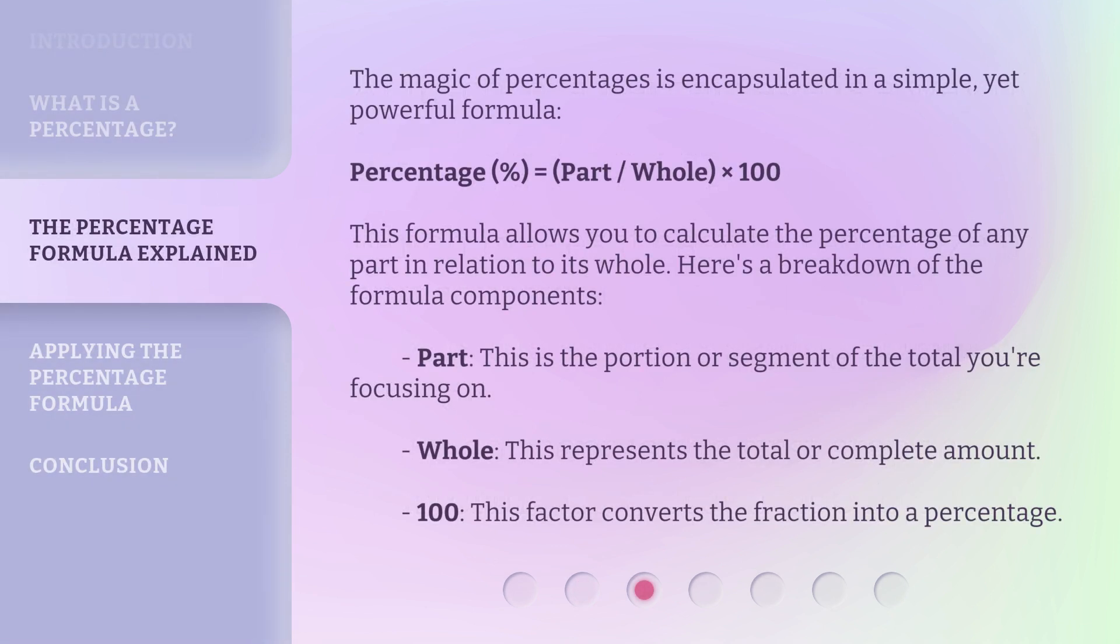The magic of percentages is encapsulated in a simple, yet powerful formula: Percentage (%) = (Part / Whole) × 100. This formula allows you to calculate the percentage of any part in relation to its whole. Here's a breakdown of the formula components.